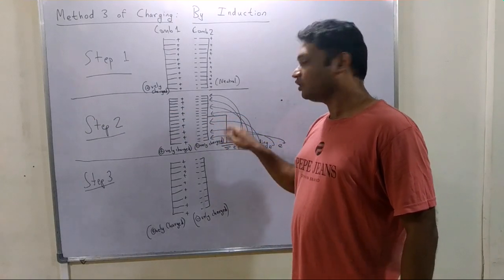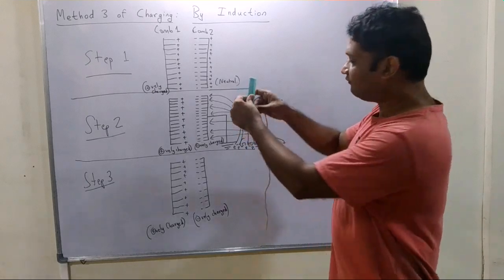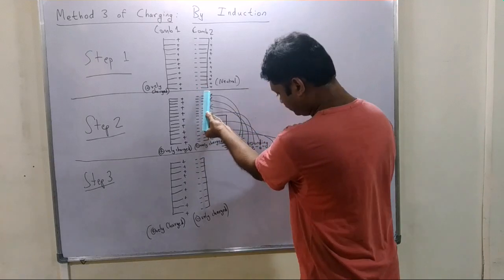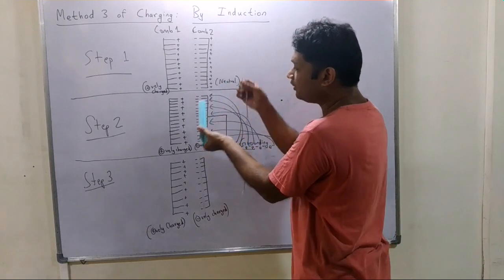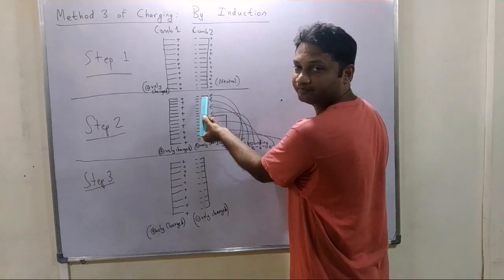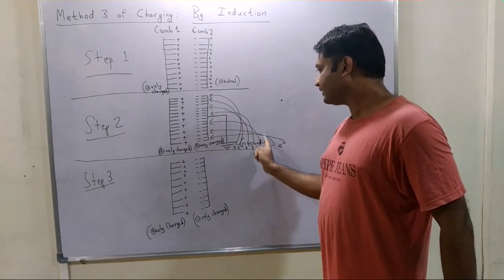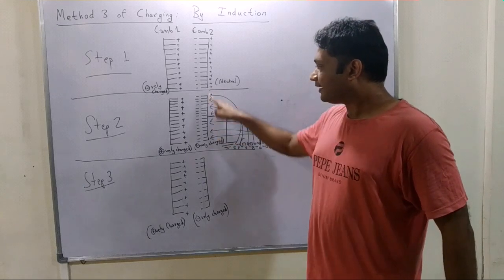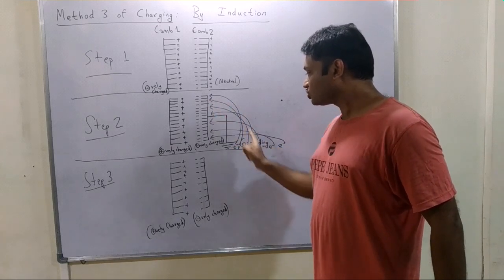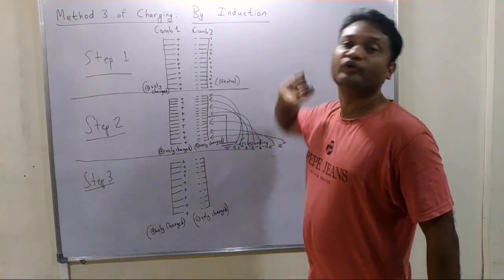In step 2, we ground the neutral comb (comb 2). Grounding means we connect a wire from comb 2 to the ground. In this process, electrons from the ground are attracted towards the positive charge on the right side of comb 2, and that positive charge becomes neutralized.